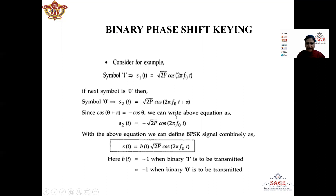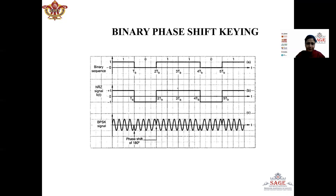In general form, the modulated signal can be written as b(t) root(2P) cos(2π f₀t), where b(t) is plus 1 when binary 1 is transmitted and b(t) is minus 1 when binary 0 is transmitted. That means b(t) is the bipolar version of the message signal d(t), which is the unipolar version represented only in the form of 1 and 0.